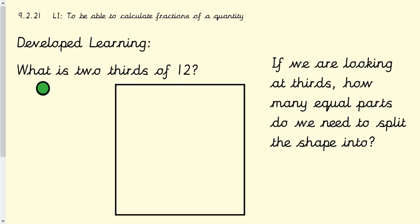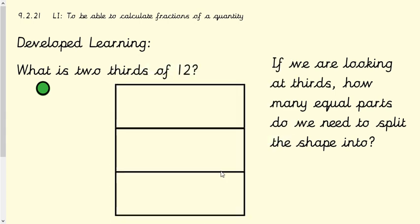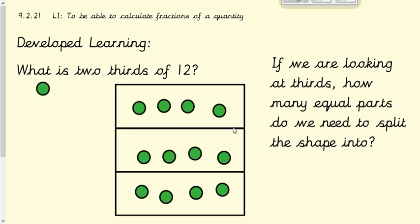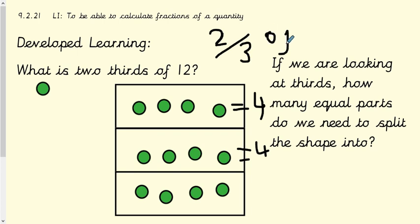Let's move on to our developed learning now. What is two thirds of 12? We've looked at one third, so now I'll show you how to work out two thirds of a quantity. We do the same as before — split our shape into thirds, three equal sections, then share out 12 counters equally. If we were working out one third, we'd count one box. For two thirds, we count two boxes. One box is four and the next box is four, so four add four is eight. Therefore two thirds of 12 is eight.